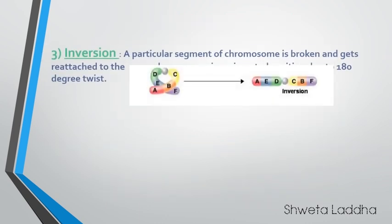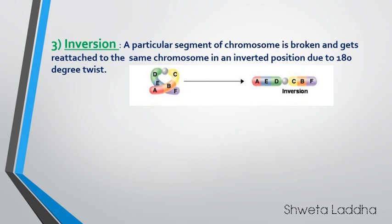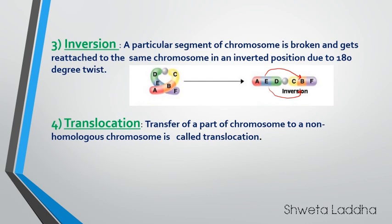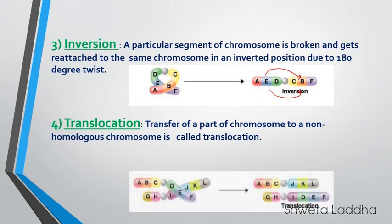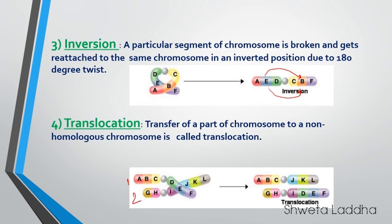The third chromosomal aberration is inversion. In a particular segment of the chromosome, it is broken and gets reattached to the same chromosome but in an inverted position. Look here — B is replacing E and E is replaced by B, attached in an inverted position by a 180-degree twist. This is inversion, and it also leads to variation. Fourth is translocation — transfer of a part of a chromosome to a non-homologous part. DEF broke from the first chromosome and got translocated to the second chromosome, while JKL got translocated to the first chromosome. These four types — deletion, duplication, inversion, and translocation — are chromosomal aberrations leading to variation.